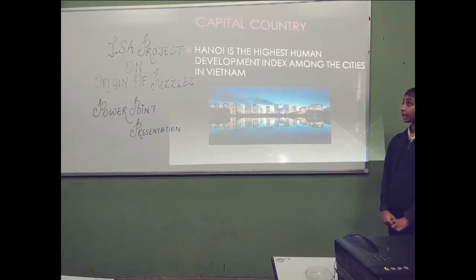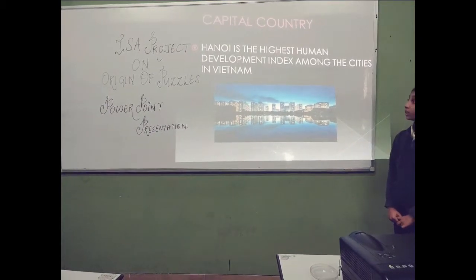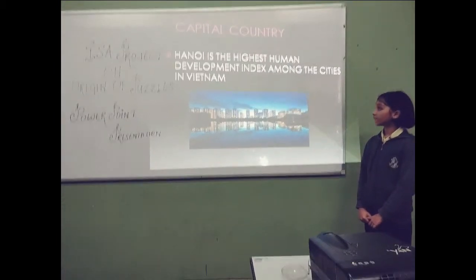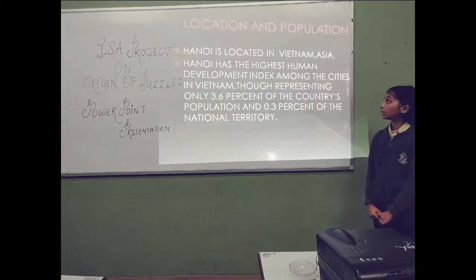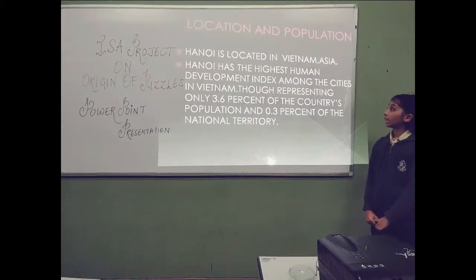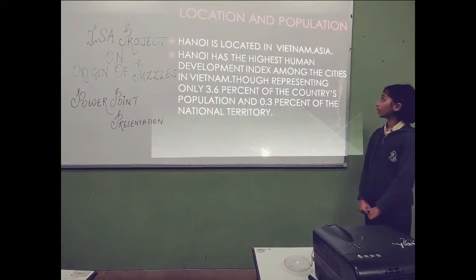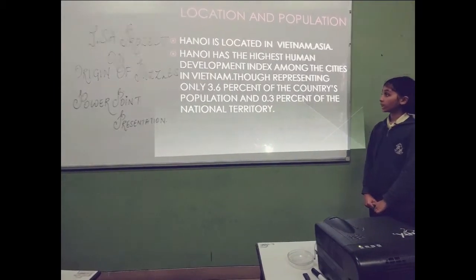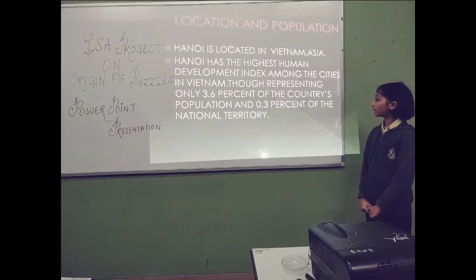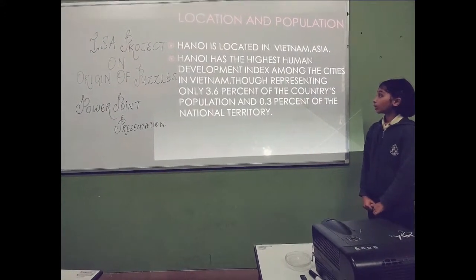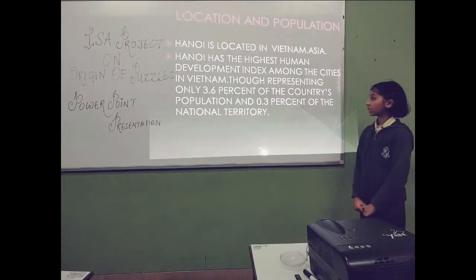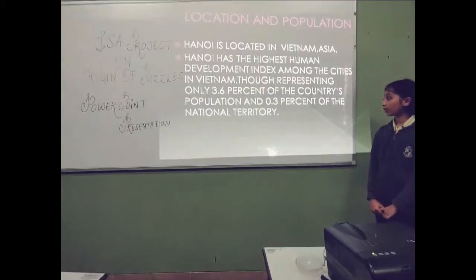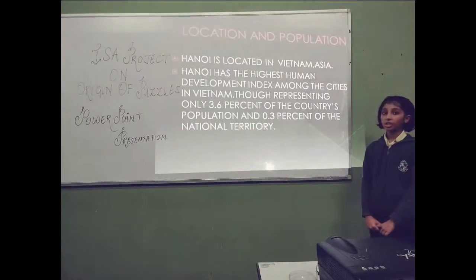Capital country. Hanoi is the highest human development index among the cities in Vietnam. Location and population. Hanoi is located in Vietnam, Asia. Hanoi has the highest human development index among the cities in Vietnam, though representing only 3.6% of the country's population and 0.3% of the national territory.